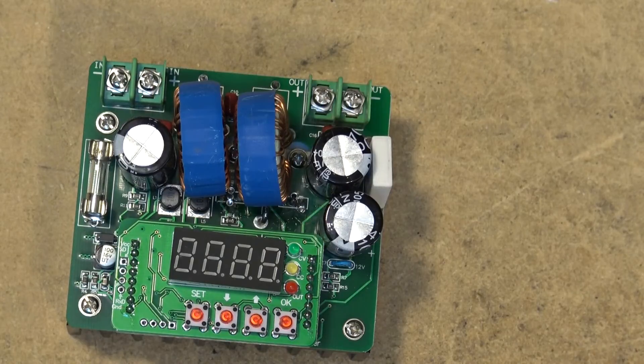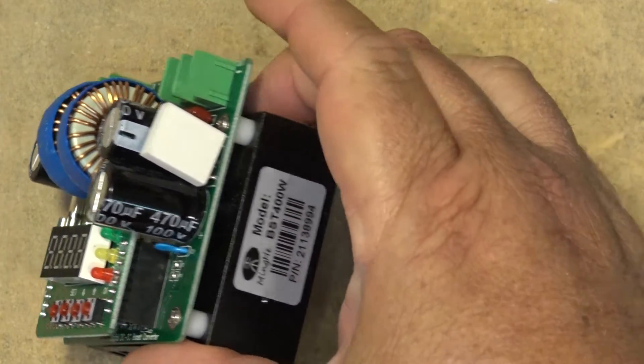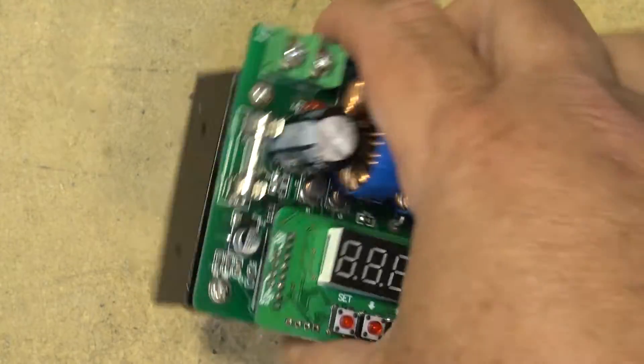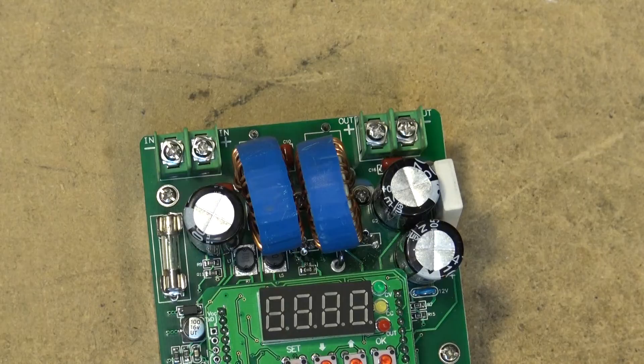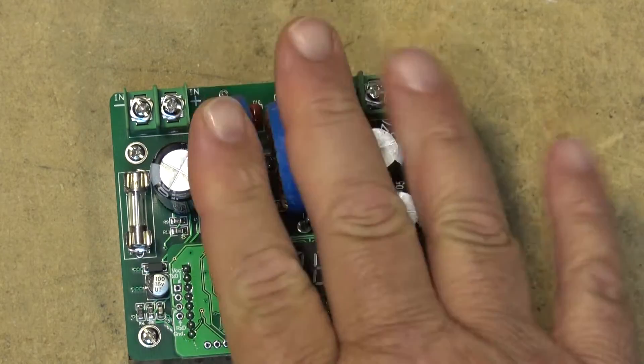Obviously as it's a current converter, it's going to need a lot of current on the input. As you can tell from the size of the inductors on this thing, it's going to be quite current hungry. I'm going to connect this up to a couple of gel cell batteries which will give us lots of current.